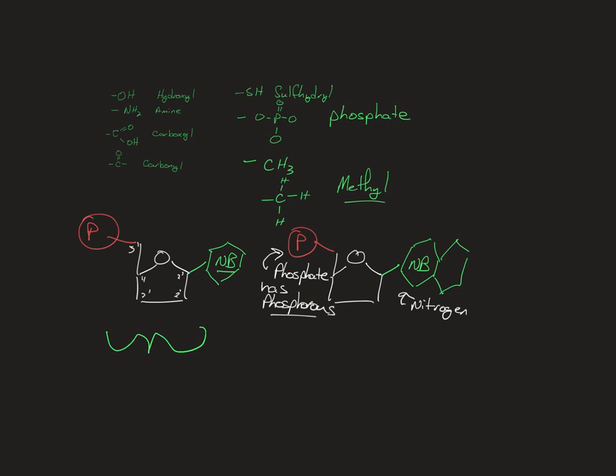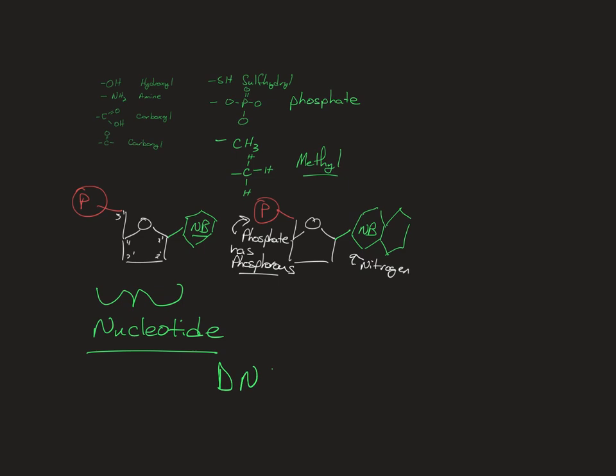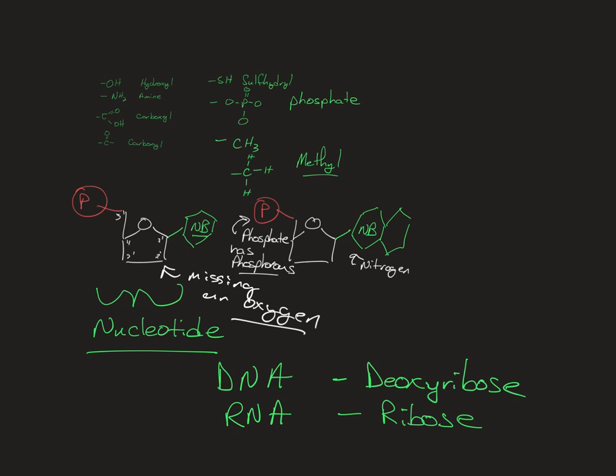You have to know what the three parts of a nucleotide are. That's found in DNA and RNA. DNA has deoxyribose and RNA has ribose. The only difference is that deoxyribose is missing an oxygen. I hope that reminds you what ribose is. And I hope you guys study for this test.